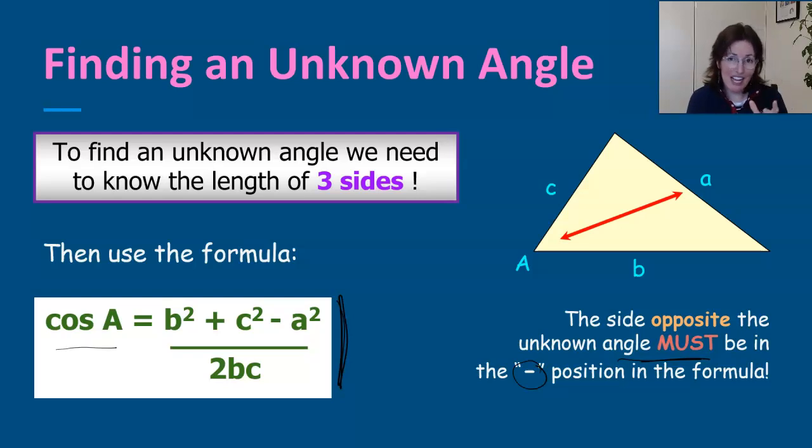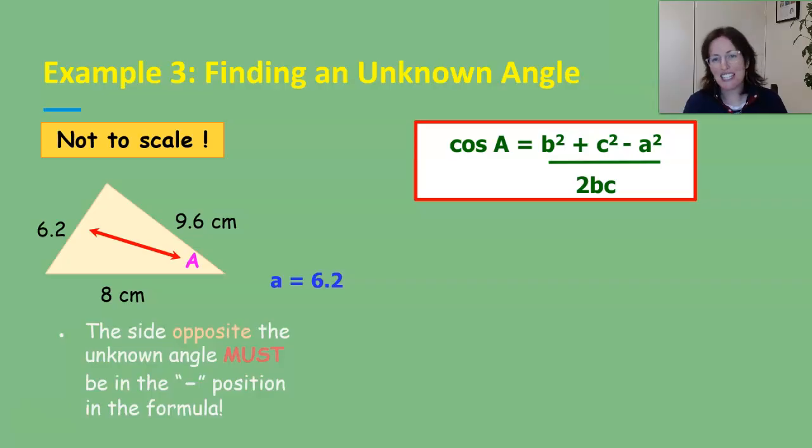I'll just talk you through that again. Notice that over here we're solving for cos of A. A is the angle. When you label your triangle you will have side a so that's little letter a and where is that in this formula down here? It's on the top line on the far right that's the one in the subtract position so we've just got to be careful of that. Let's put that into practice.